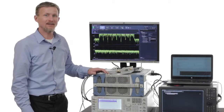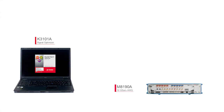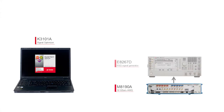Now let's take a look at the demo setup. In our demo setup, we have an arbitrary waveform generator, the M8190. This is connected to the PSG, which up-converts the analog IQ signals up to the frequency of interest. This can be anywhere from a few megahertz all the way to 44 gigahertz. In this demo, we're going to use 28 gigahertz.